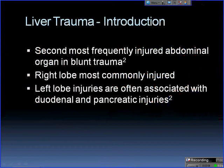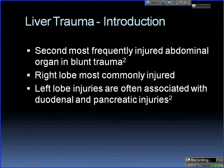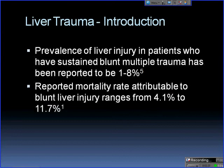Regarding liver trauma: the liver is the second most frequently injured abdominal organ — the spleen is number one. The right lobe is most commonly injured, and left lobe injuries are often associated with duodenal and pancreatic injuries. The prevalence of liver injury in blunt trauma has been reported at about 1 to 8 percent, though different articles varied widely — some up to 25 percent in operative patients — but most papers were between five and ten percent.